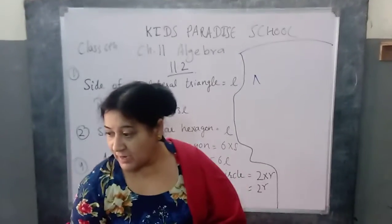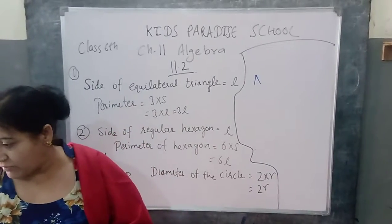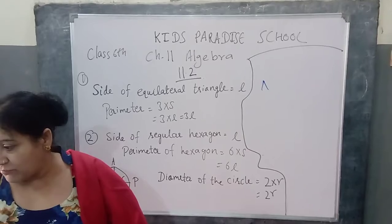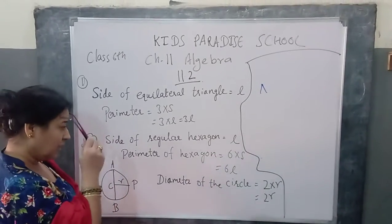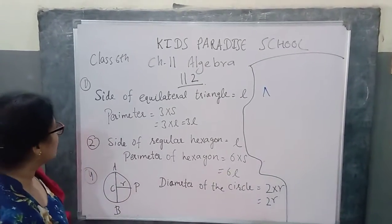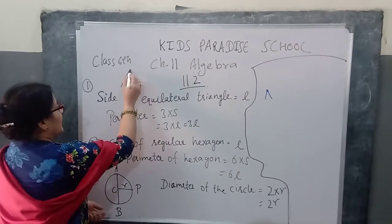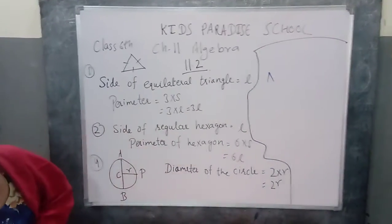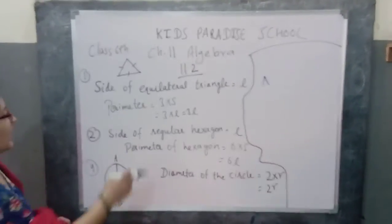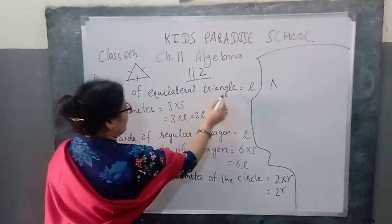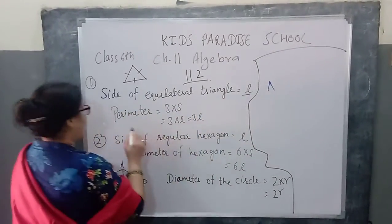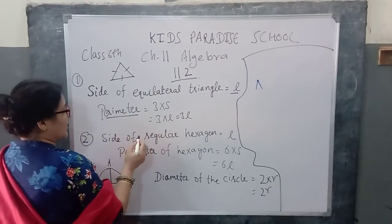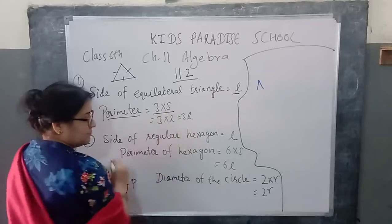Okay, exercise 11.2 ka first portion hai. The side of an equilateral triangle is shown by L. Express the perimeter of the equilateral triangle using L. Equilateral triangle kya hoti hai? Jiski tino side equal hoti hai — the triangle in which all three sides are equal is called an equilateral triangle. The side is given as L, and perimeter is 3 multiplied by side.